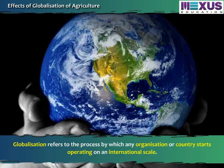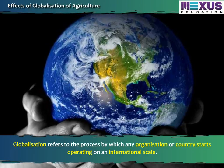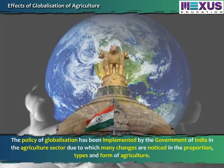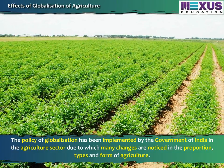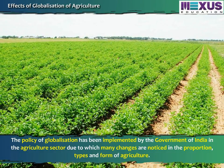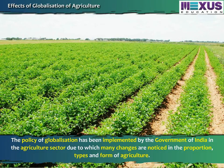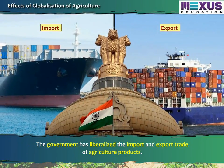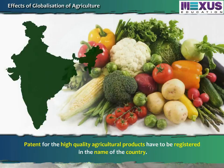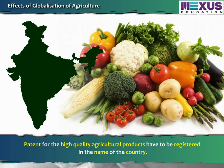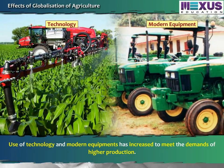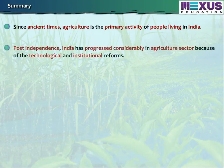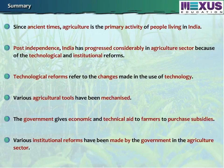Globalization refers to the process by which any organization or country starts operating on an international scale. The policy of globalization has been implemented by the government of India in the agricultural sector, due to which many changes are noticed in the proportion, types and form of agriculture. The government has liberalized the import and export trade of agriculture products. Patents for high-quality agricultural products have to be registered in the name of the country. Use of technology and modern equipment has increased to meet the demands of higher production. Let us now recap all the important points covered in this module on reforms in Indian agriculture.